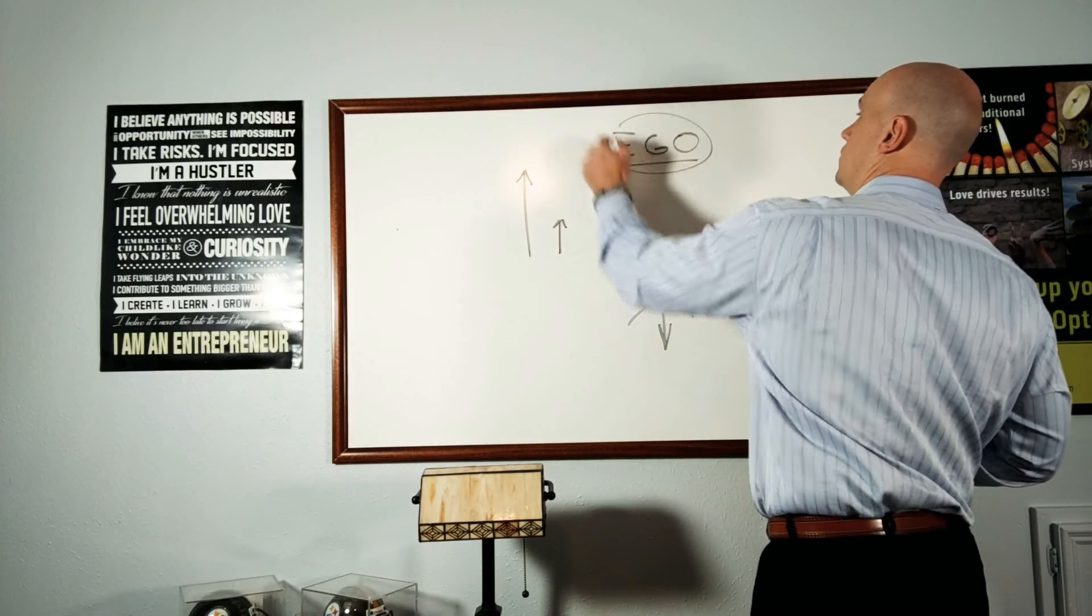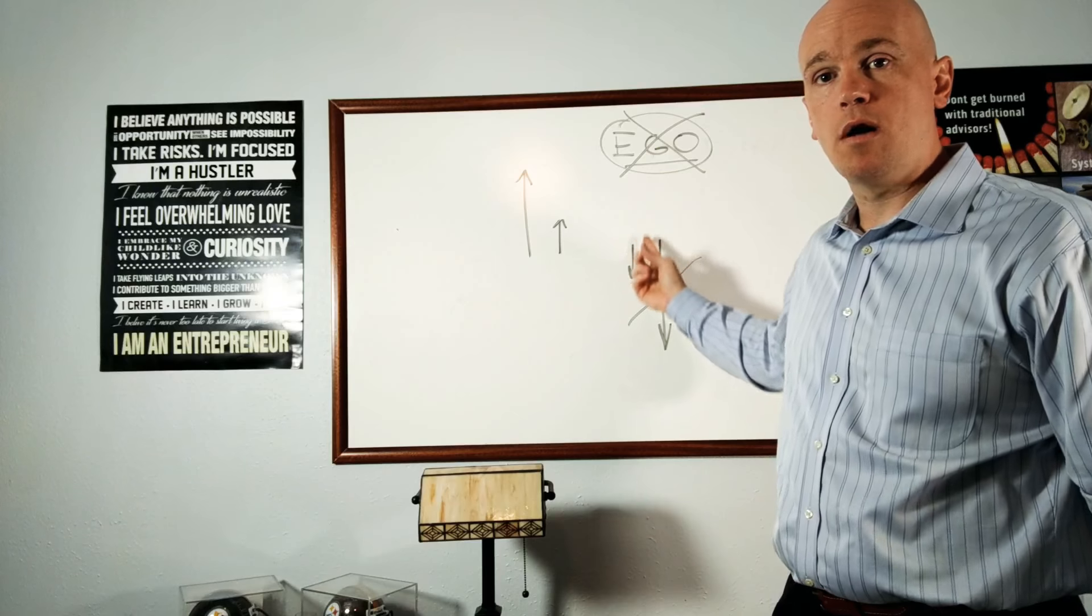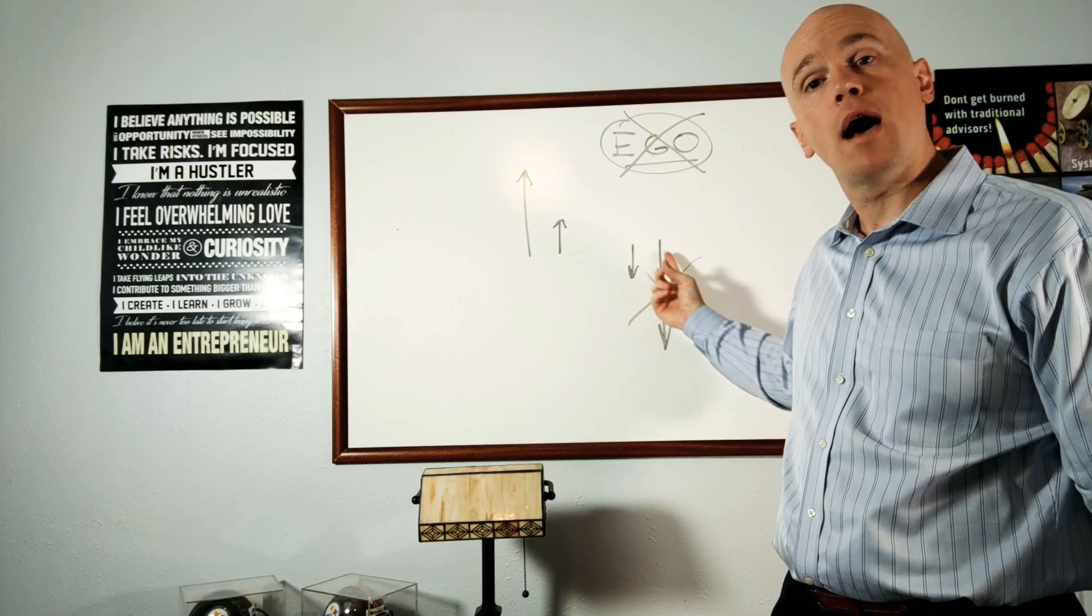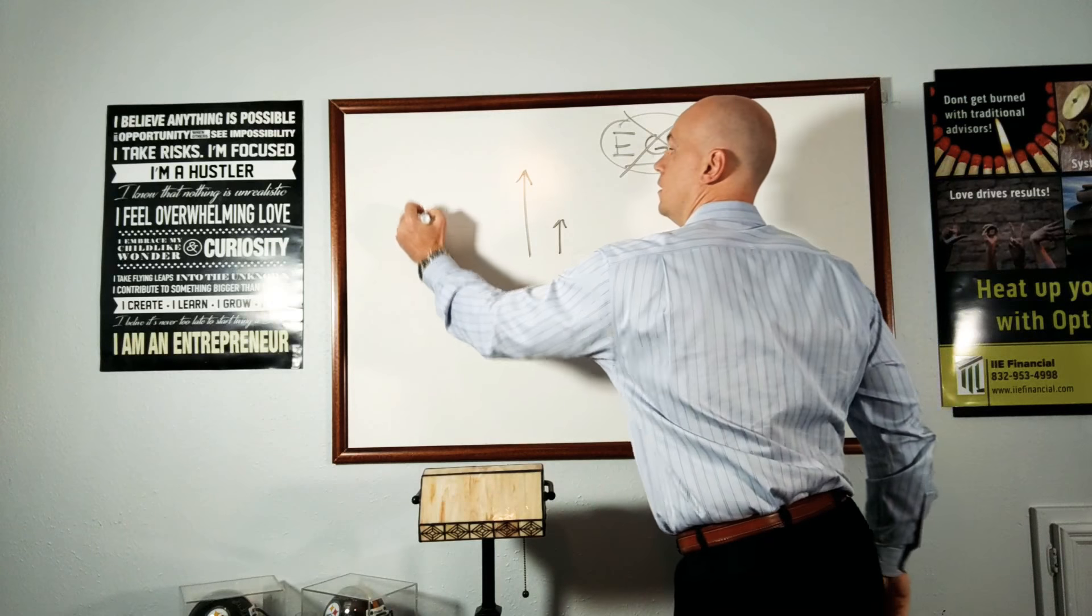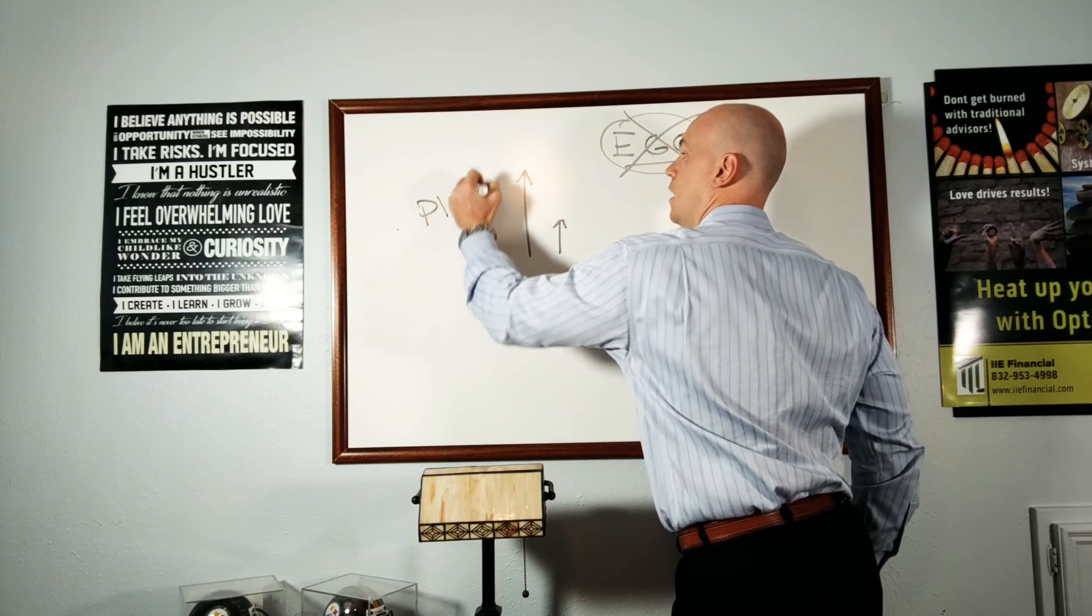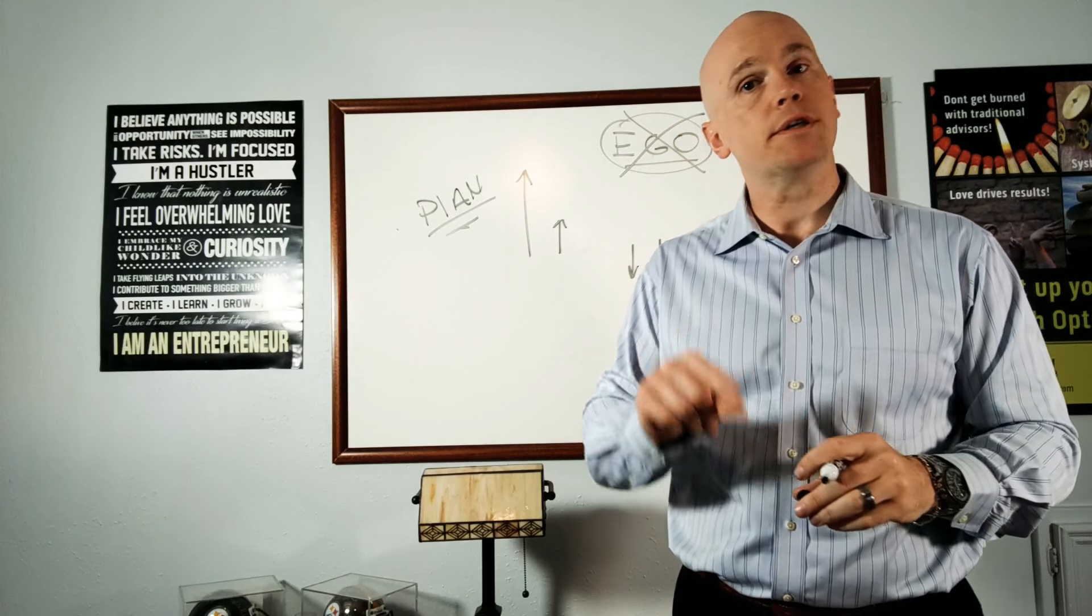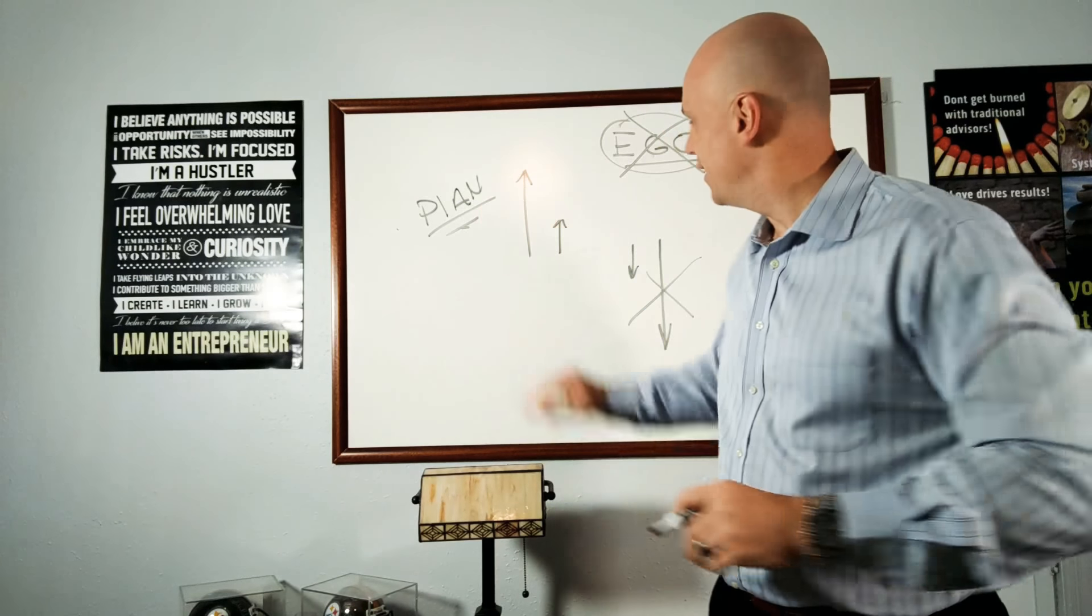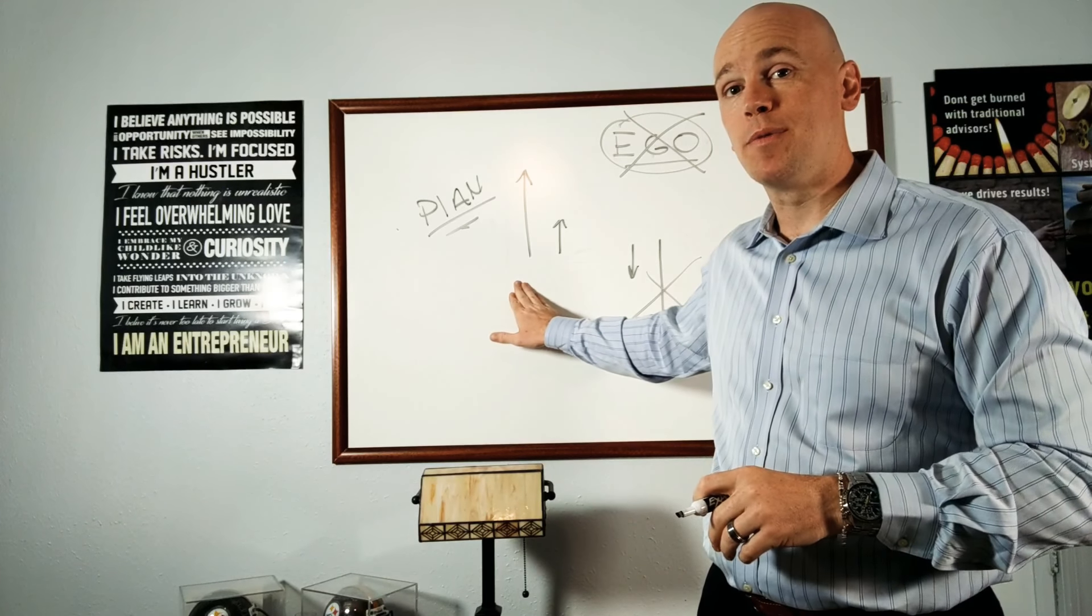So eliminate the ego to allow your small losers to stay small and not become big losers. And then also make sure that you have a plan for every investment in your portfolio to allow those small winners to continue to run into big winners. Let the small winners and the small losers cancel each other out. And it's the big winners that propel your account.